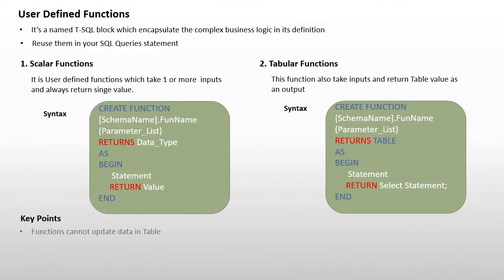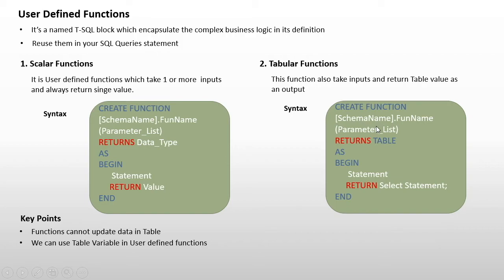Now let's see some key points about user-defined functions in SQL Server. First, functions cannot update data in a table — within either a scalar or tabular function, you cannot write an UPDATE statement. Second, you can use table variables in user-defined functions and return them. Third, you cannot reference an invalid object inside a function — if you refer to a table that does not exist, the function will fail.